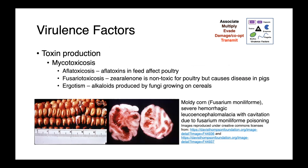We can also see disease associated with toxin production — what we would call mycotoxicosis — and there's a variety of well-recognized examples. Aflatoxicosis, due to the production of aflatoxins in feed, can affect poultry. We can see fusariotoxicosis — zearalenone is one example that's non-toxic for poultry but causes disease in pigs. And then ergotism: ergot is a fungus that produces alkaloids when growing on cereal crops. Below we have some moldy corn with Fusarium species, and on the right, lesions associated with fusariotoxicosis — severe hemorrhagic leukoencephalomalacia with cavitation. The fungus itself doesn't have to be in the body in order to get sick from these organisms.